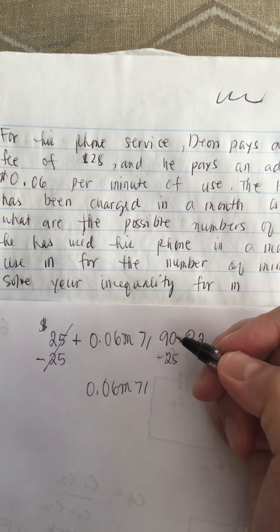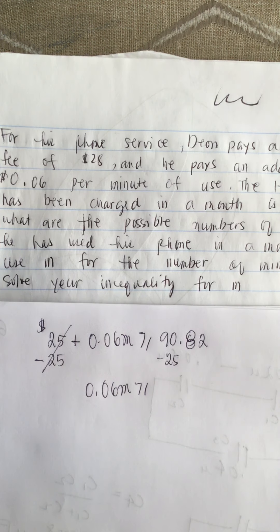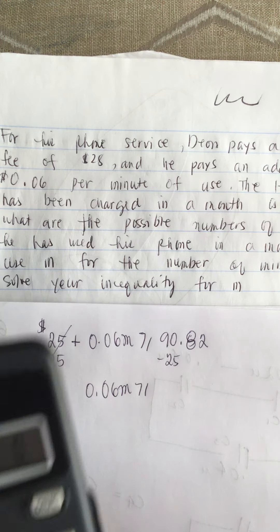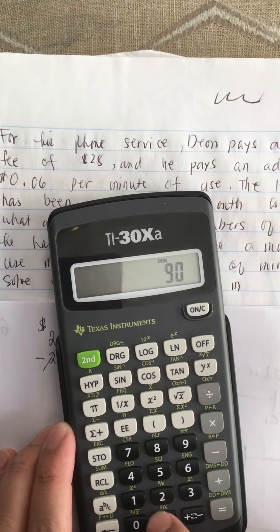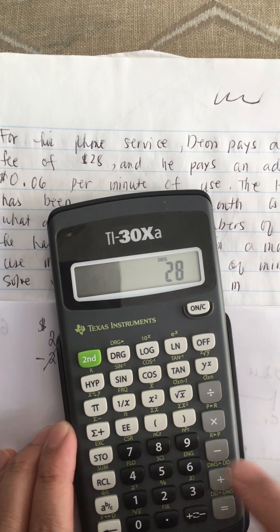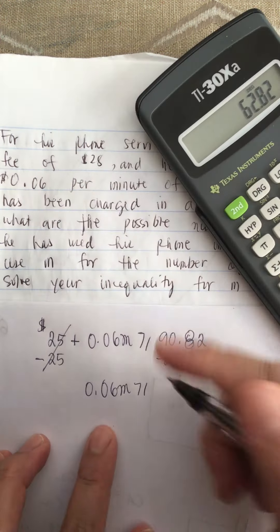It's greater or equal to $90.82. So $90.82 minus 28 is 62.82.